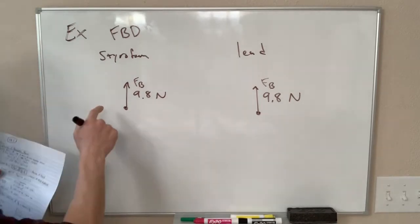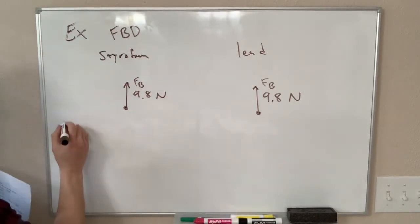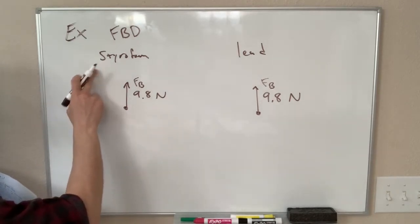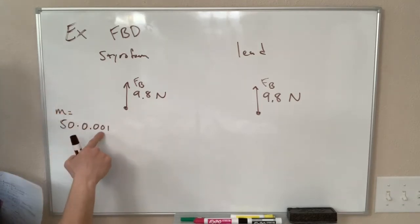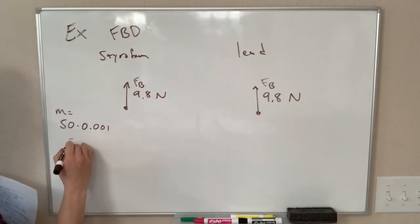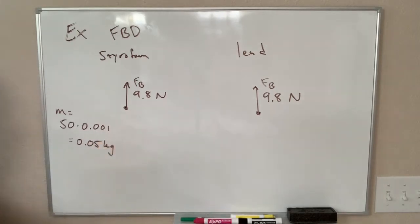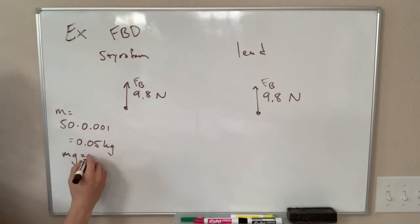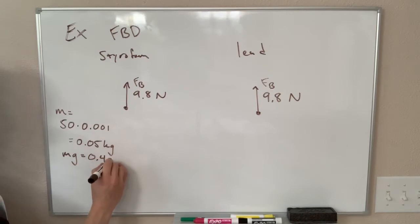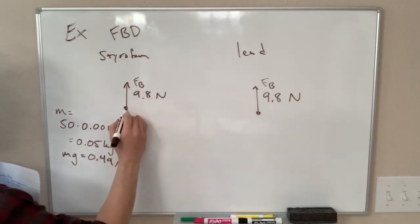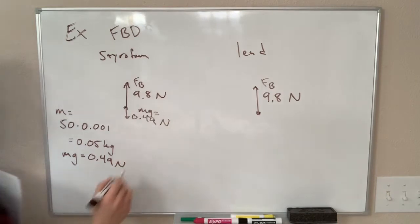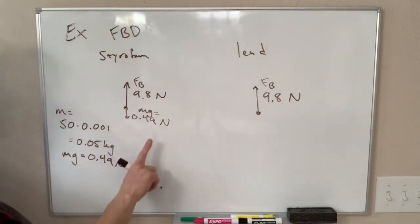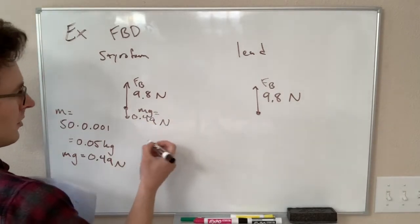For this styrofoam block, our mass is the styrofoam density times the volume: 50 times 0.001, which equals 0.05 kilograms — 50 grams. So mg for this block is 0.05 times 9.8, which is 0.49 newtons. So we get 9.8 newtons up and 0.49 newtons down from gravity, giving us a net force that is upward — around 9-point-something newtons upward.